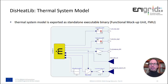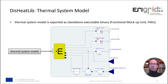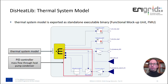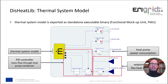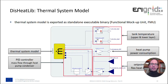To make these models available for the co-simulation, you can export them as standalone executables — so-called functional mock-up units or FMUs. The system model is used as an individual block, augmented with a PID controller for the mass flow through the heat pump condenser. It is also augmented with inputs for the setpoint from the flex-heat controller, and outputs that go to the flex-heat controller and the voltage controller — specifically the heat pump power consumption and tank temperature.